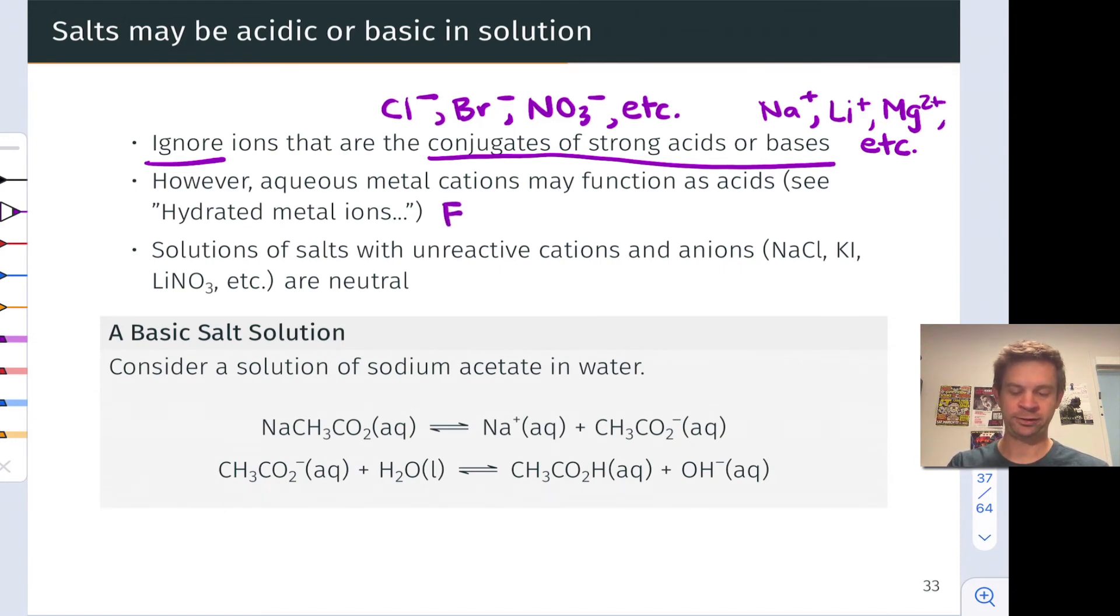In aqueous solution, the iron-3 cation is actually coordinated to multiple water molecules. Six is typical, and this can surrender a proton to create H3O+. To make sure this is balanced, I'm just going to write this as H+, and an iron hydroxide with the remaining five waters coordinated, now with a charge of 2+ rather than 3+. We'll see how that works in more detail in a couple of slides.